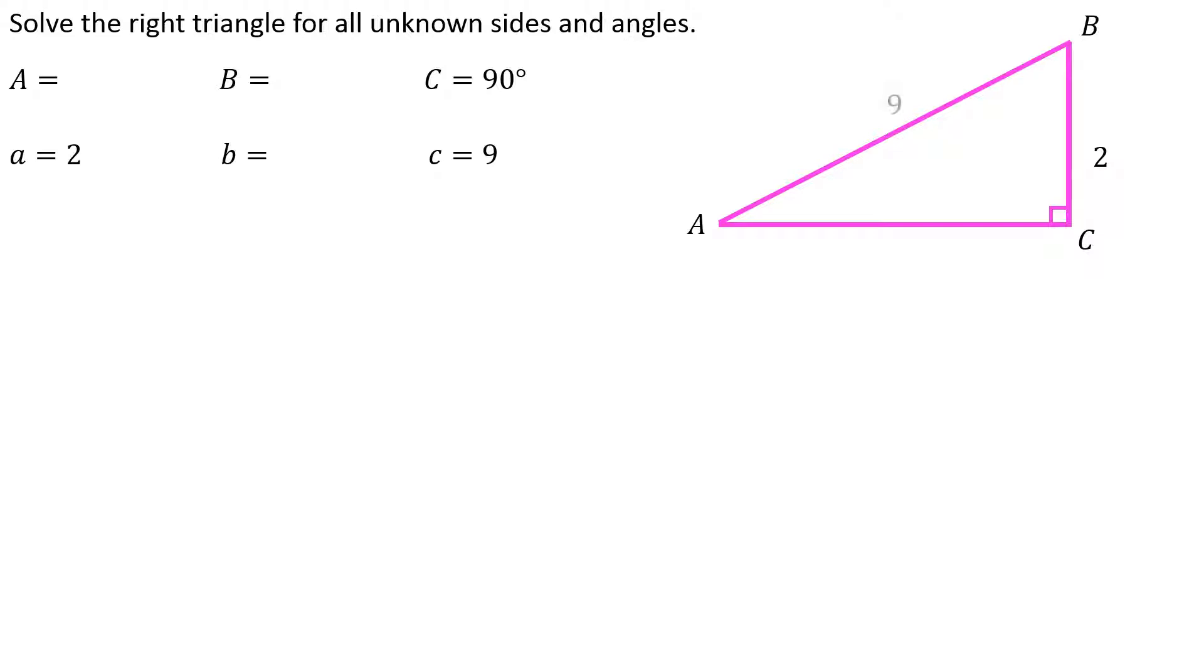Highly recommend you draw a picture, label everything you know. I'll choose to go after angle A first. By picking an angle, I now know what side is opposite, what side is adjacent. Of course we already knew what the hypotenuse was going to be. So if I want that angle, I have to use sine of theta because I know opposite and hypotenuse.